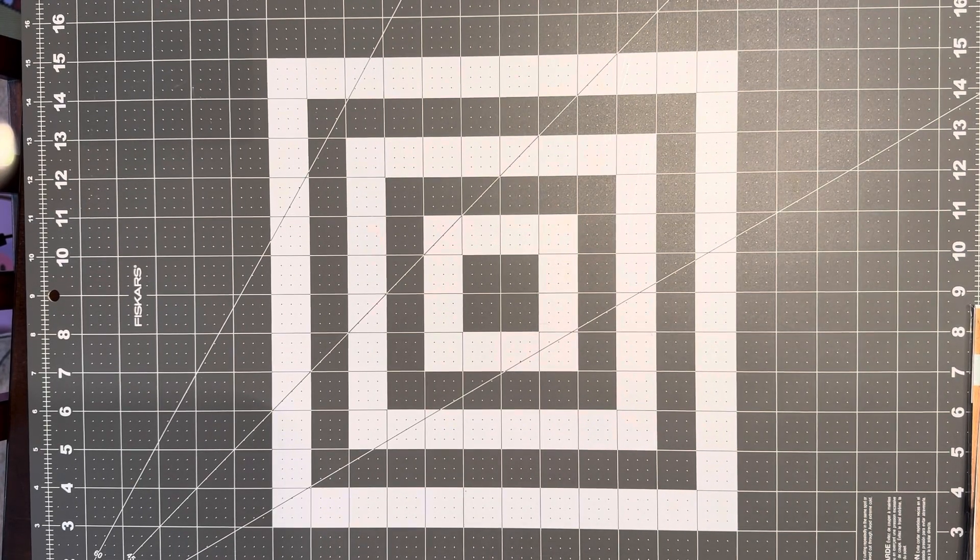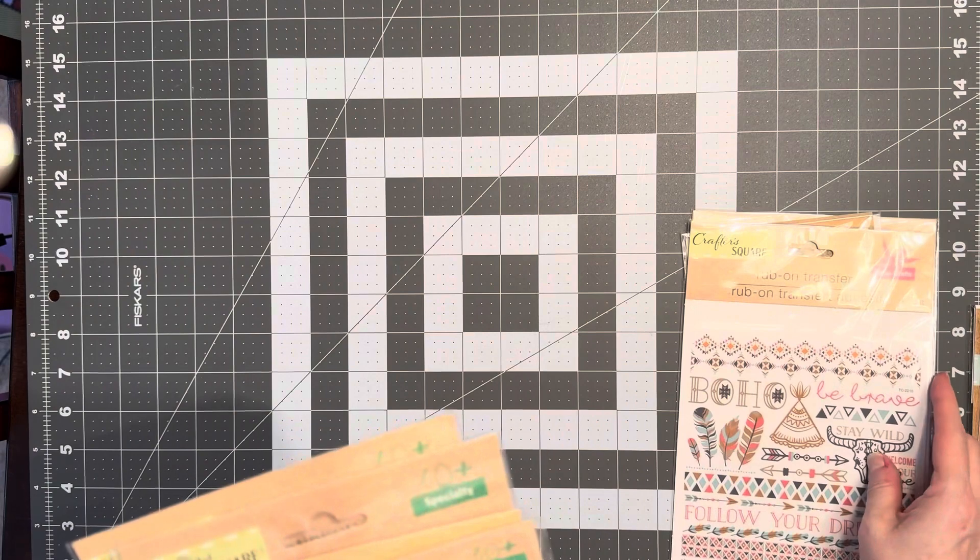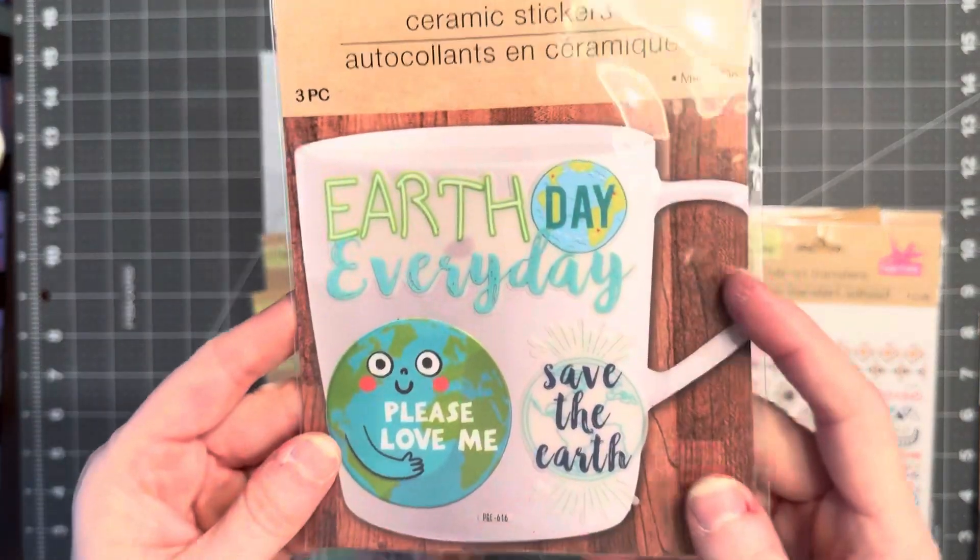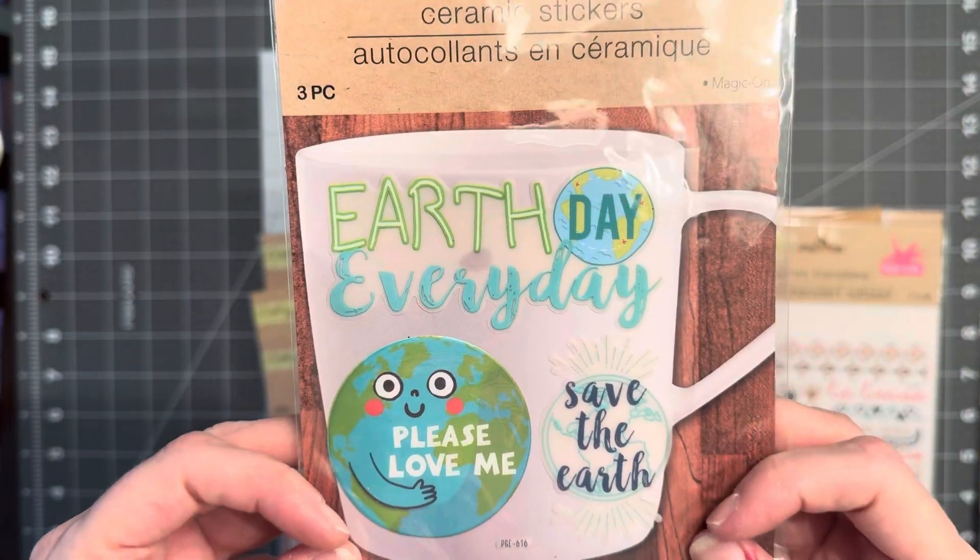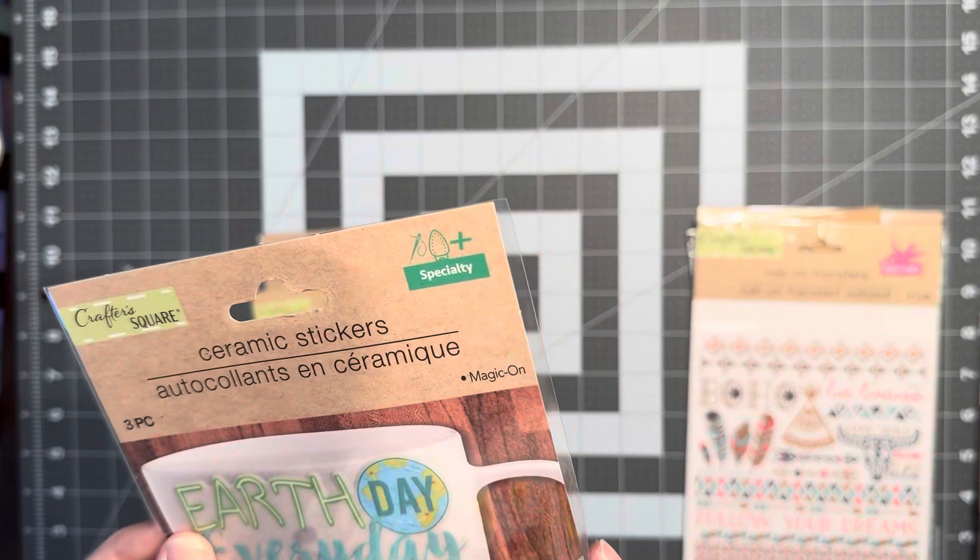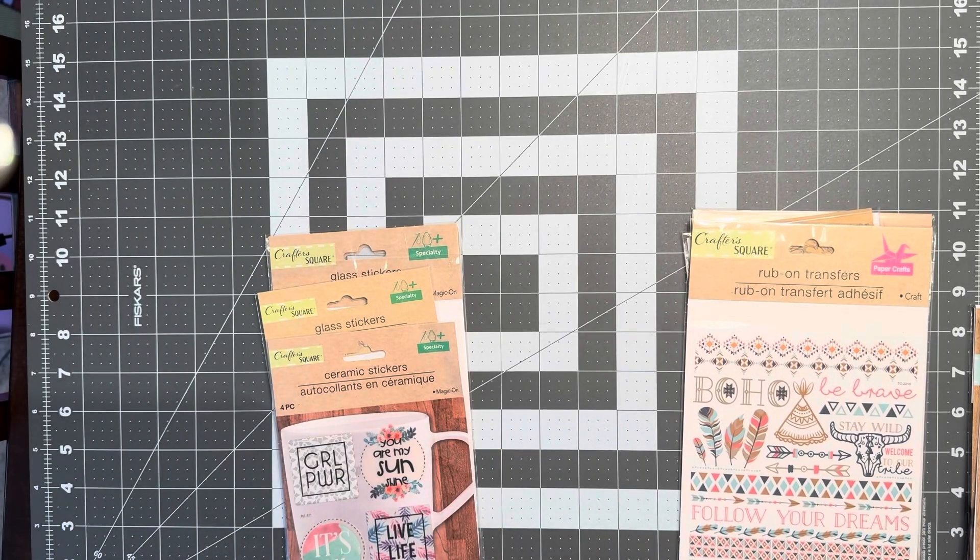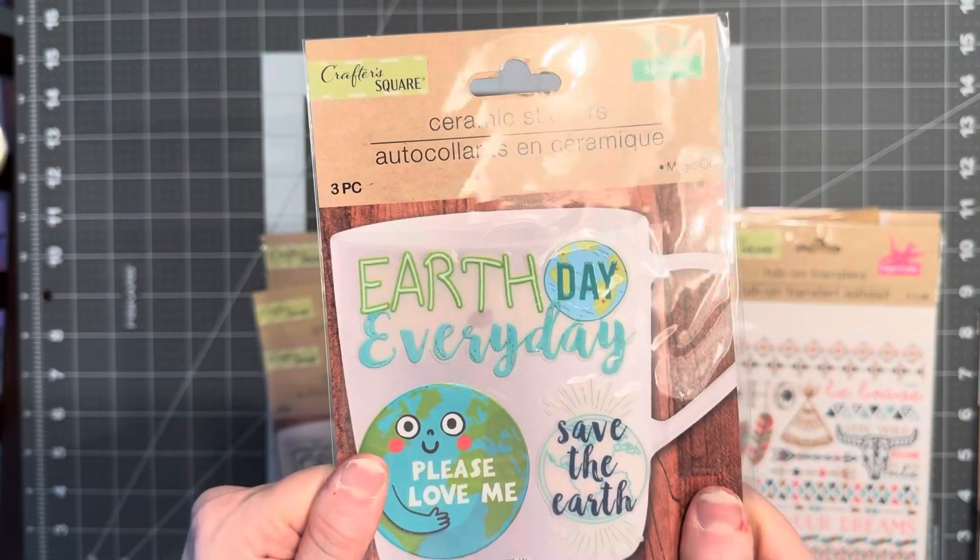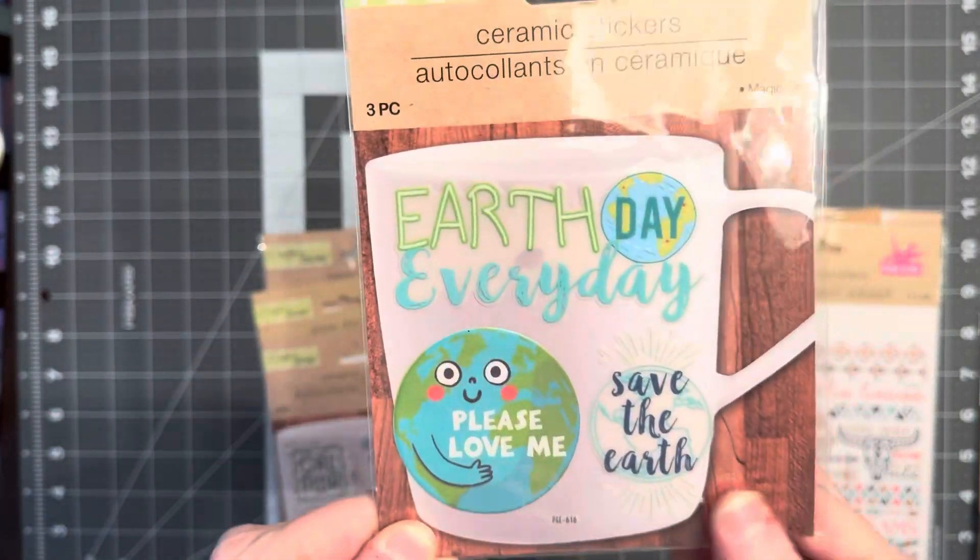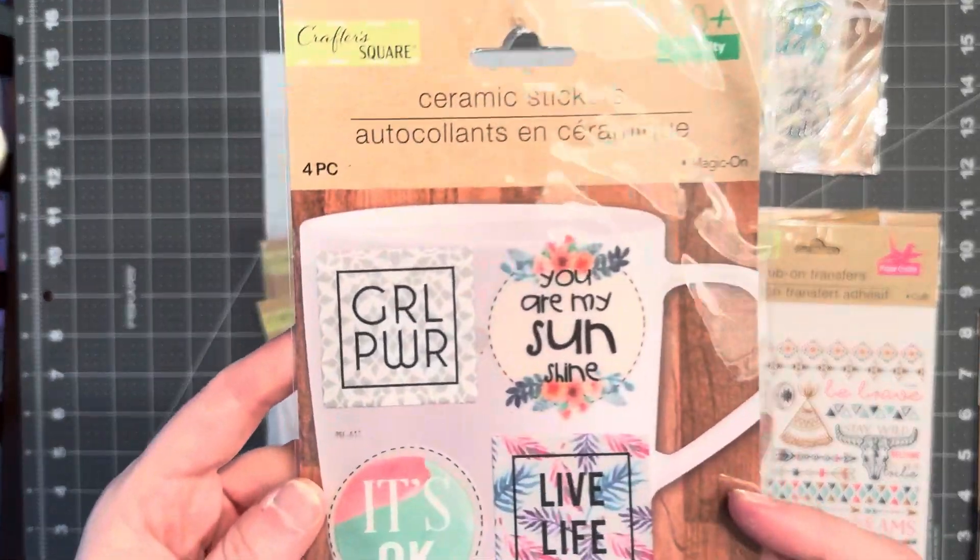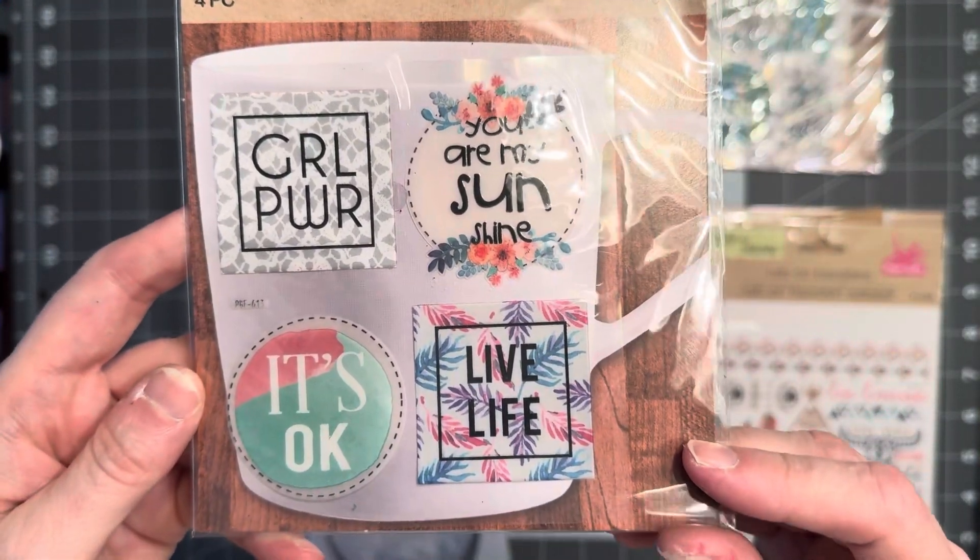And then I bought some stickers and rub-on transfers as well. So here are some ceramic stickers. You put these on cups or whatever you have that's ceramic. I don't believe there's any instructions. You just kind of put them on where you want them to go, and then you let them adhere to that surface for a couple days and you should be good to go. But I got this one, this one that says girl power, you are my sunshine, it's okay, and live life.